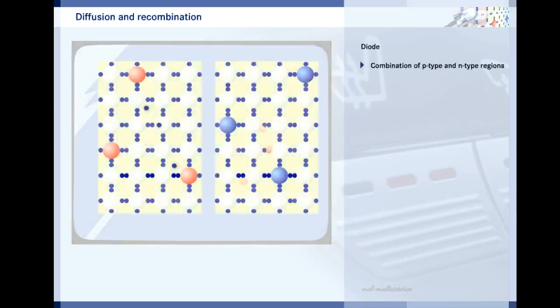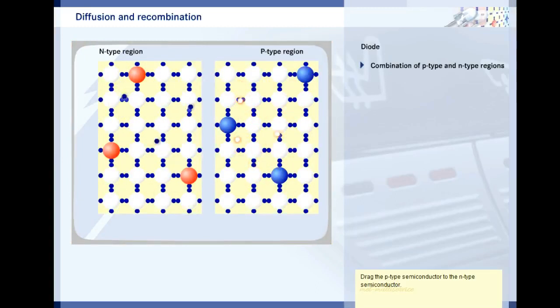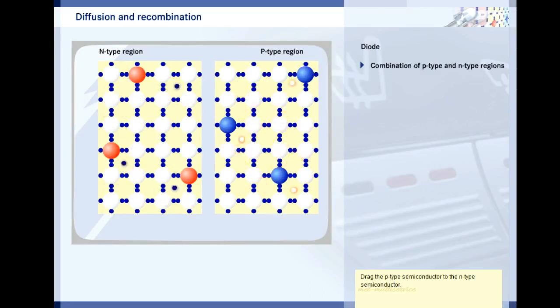Essentially, every diode is a combination of a p-type region and an n-type region. Watch what happens when a p-type semiconductor comes into contact with an n-type semiconductor.